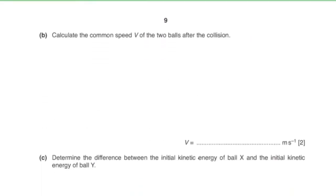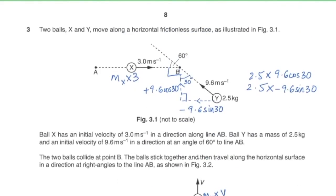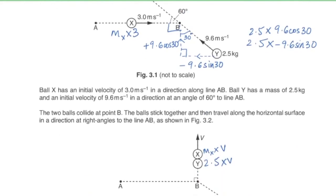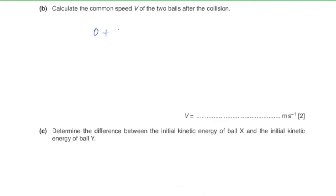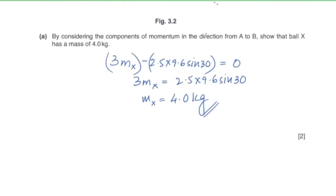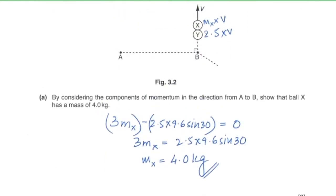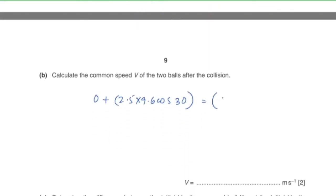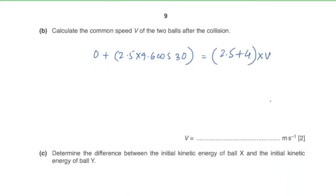Part b: calculate the common speed v after the collision. Considering momentum in the y-direction before collision: ball X had zero y-momentum, ball Y had 2.5 × 9.6 × cos(30°). After collision: (2.5 + 4) × v = 2.5 × 9.6 × cos(30°), giving a common velocity of 3.2 m/s.